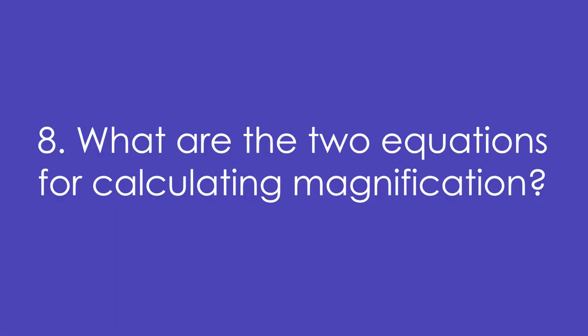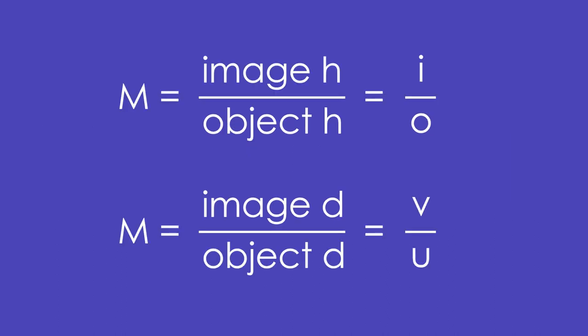What are the two equations for calculating magnification? Magnification is equal to the image height divided by the object height, and it's the same for the distances too.